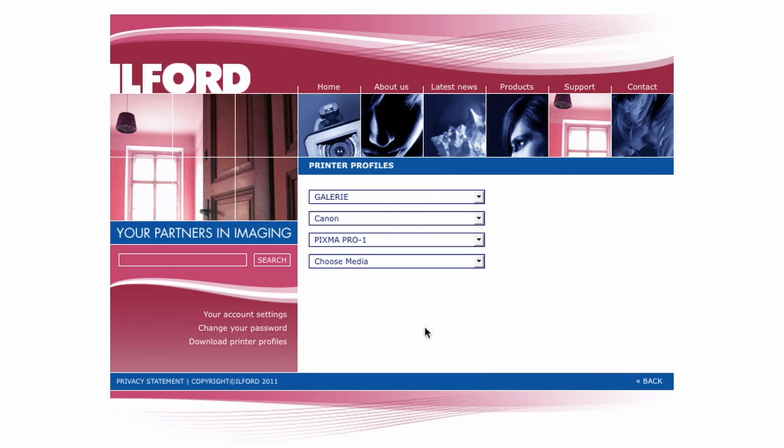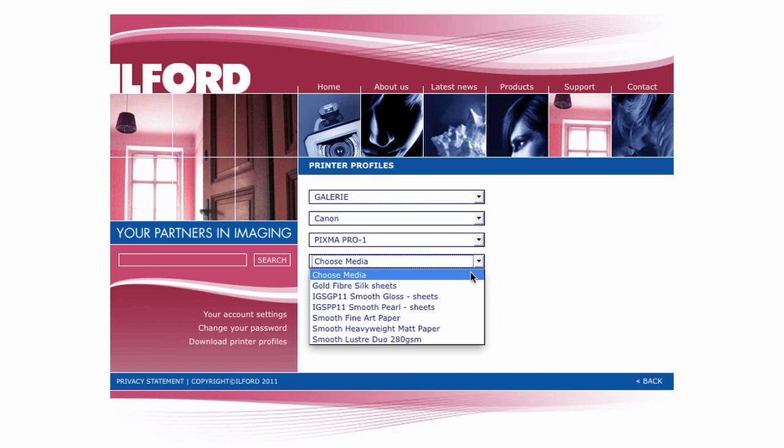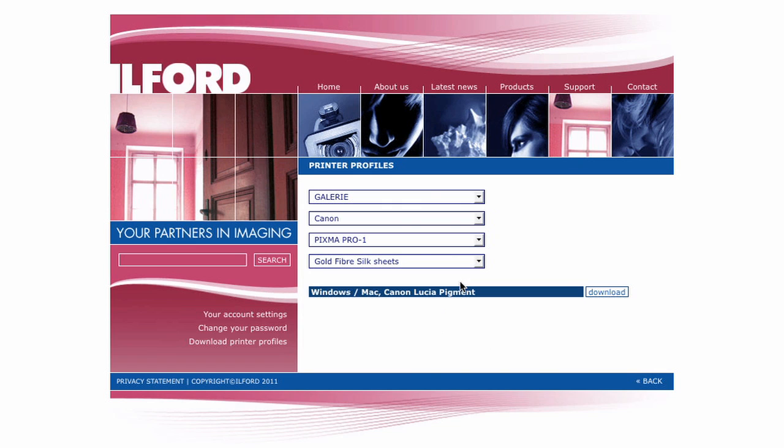From here we're going to choose your media type. I'm going to pick my favorite which is gallery gold fiber silk and then simply click download.